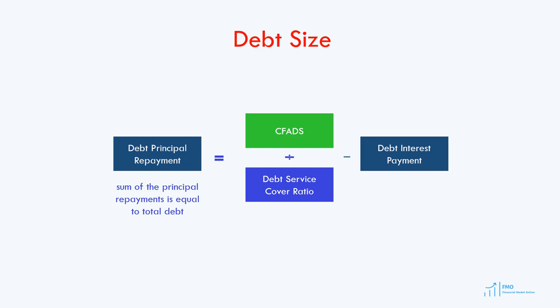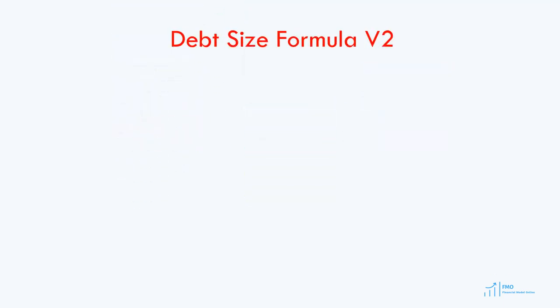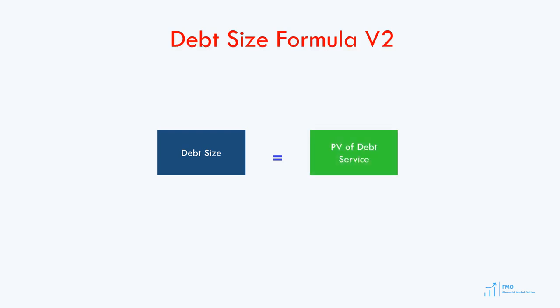Note that the higher the CFADS, the bigger the debt size is going to be. The higher the risk of the project, the higher the DSCR will be, which will result in a smaller debt size. And the higher the interest rate, the lower the debt size is going to be. This debt size equation is one way to model the debt size in the project finance model. Another way to size the debt is to take the present value of the debt service, where the discount rate used in the present value formula is the debt interest rate. We will see in the next lesson how to carry out debt sizing in Excel.